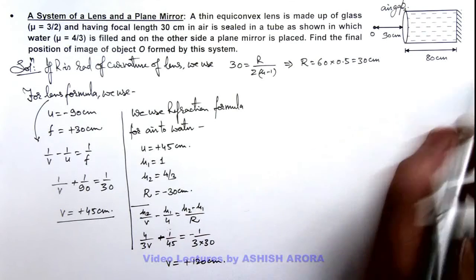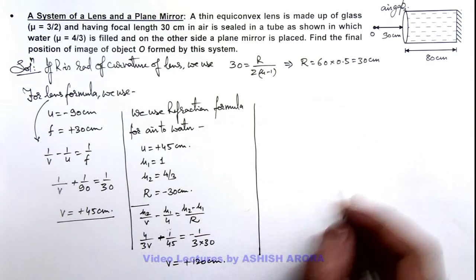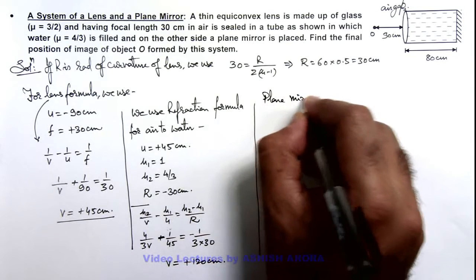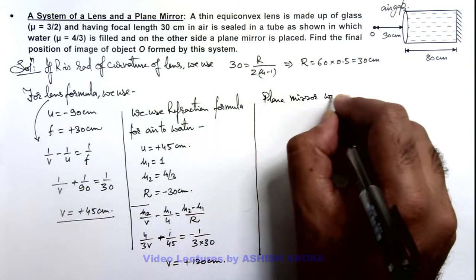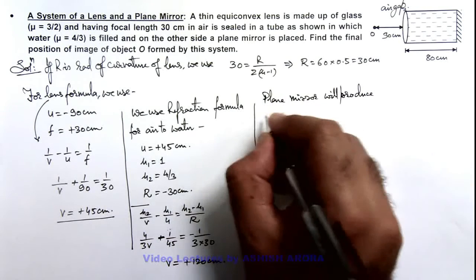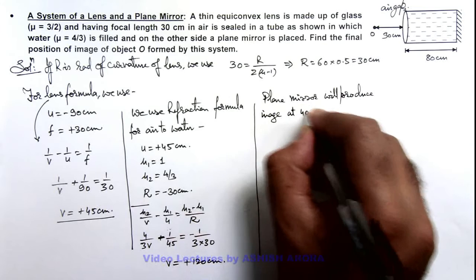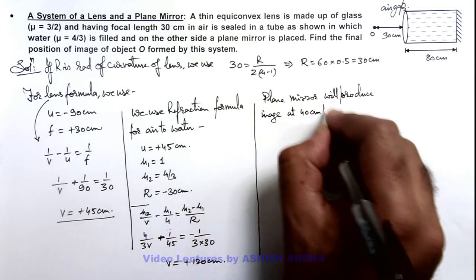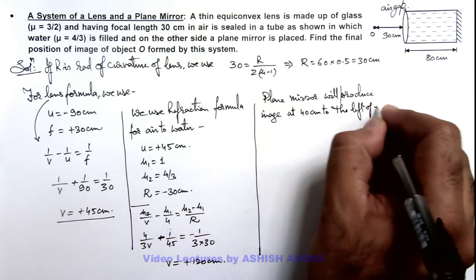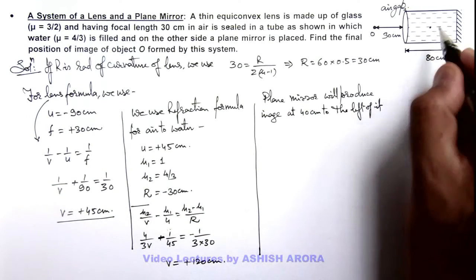That means it is 40 centimeter to the left of the plane mirror. So the plane mirror will produce an image at 40 centimeter to the left of it, which means the image is produced at the midpoint of this tube.